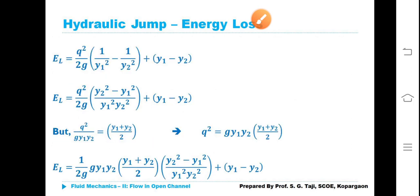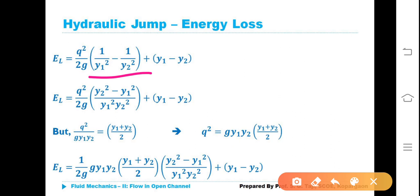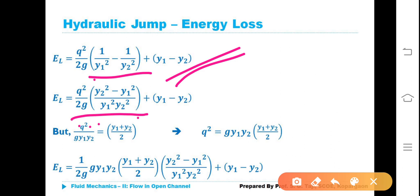Therefore, taking q²/2G as a common factor, we get EL = (q²/2G) × (1/Y1² − 1/Y2²) + (Y1 − Y2). Taking LCM and simplifying gives EL = (q²/2G) × (Y2² − Y1²)/(Y1²·Y2²) + (Y1 − Y2).